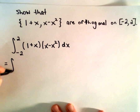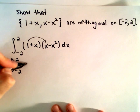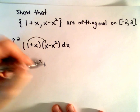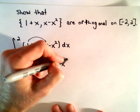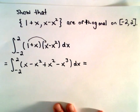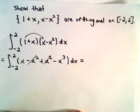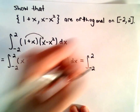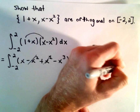This shouldn't be too terrible — it's just a matter of multiplying it out. If we distribute: one times x is x, one times negative x squared gives negative x squared, x times x gives positive x squared, and then we'll have negative x to the third. Our negative x squared and positive x squared cancel, so now we're just calculating the integral from negative two to two of x minus x³ dx.